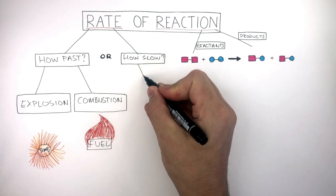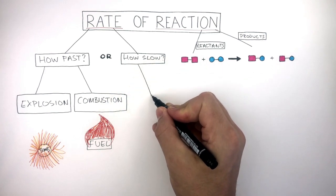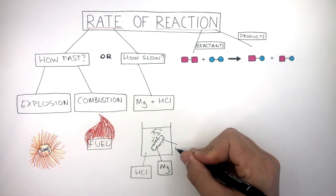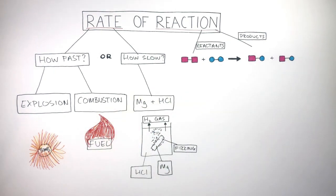Another chemical reaction, which is slower than the first two, is magnesium and hydrochloric acid. As they react, there is fizzing, which means a gas is given off and in this case is hydrogen gas.